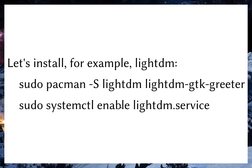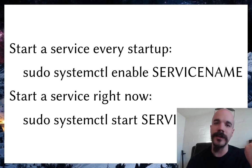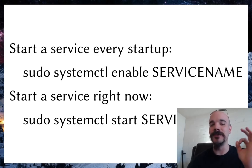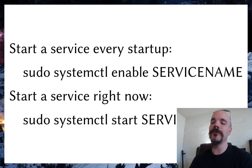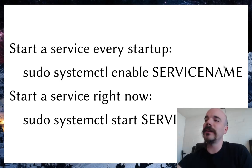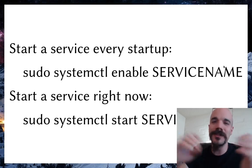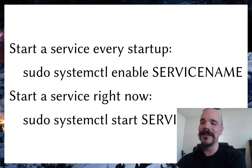A reminder: when installing a Linux distribution from scratch, everything you want to start at boot, you have to explicitly tell Linux to start. To start a program at boot, run sudo systemctl enable and then the service name. If you want to start a service right now without waiting for reboot, replace enable with start. A lot of people ask me why something they installed isn't running — usually you just need to run systemctl enable and start for it.